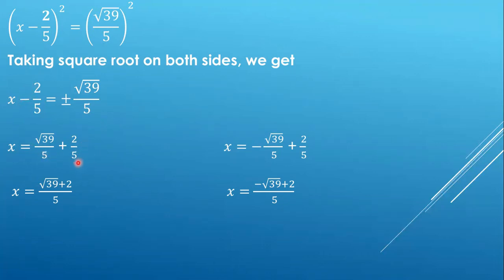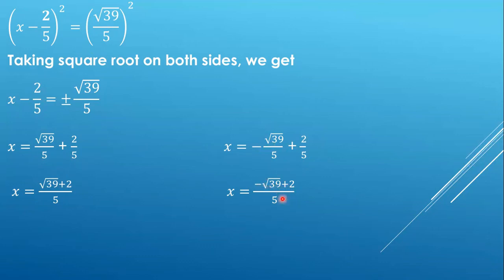Since the denominators are the same, we write it as (√39 + 2)/5. And for the other case we have -√39/5 + 2/5, giving us (-√39 + 2)/5. So the two roots of this quadratic equation are (√39 + 2)/5 and (2 - √39)/5.